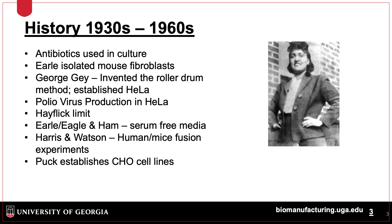These cells made it possible to mass-produce the polio vaccine and many other advances. In the early 1960s, Leonard Hayflick established what would be known as the Hayflick Limit, which acknowledges normal cells have a finite lifetime, unlike cancer cells like HeLa, which are immortal.